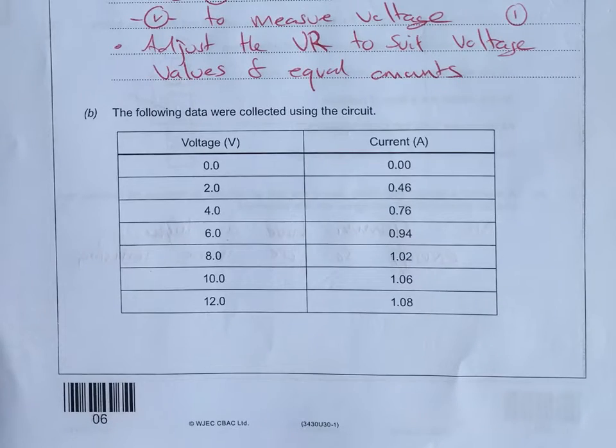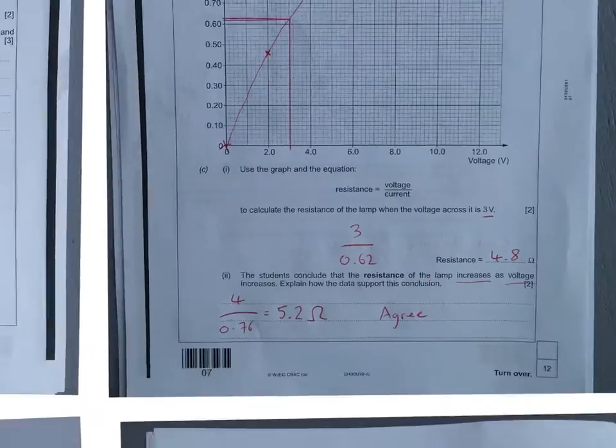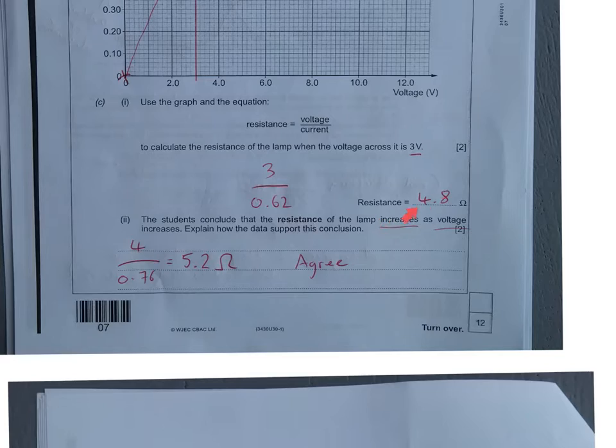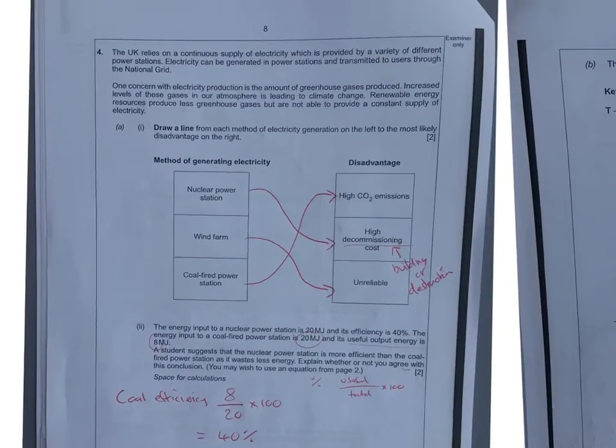I'm going to find out what the current was when it was four. Easy way to do that is just to look at my table. So at four it was 0.76, so if I bring it back over here you can see that I've stuck four over 0.76 to give me a resistance of 5.2. 5.2 is bigger than 4.8, so I reckon this student is right, so I agree.